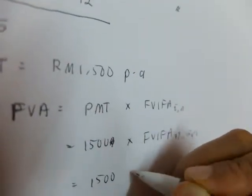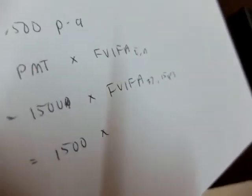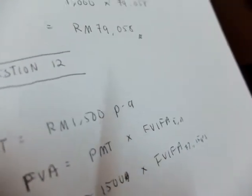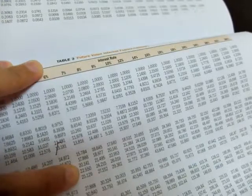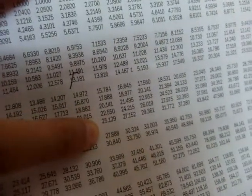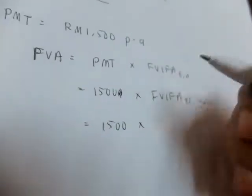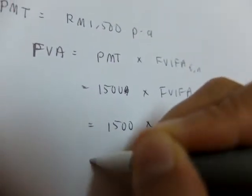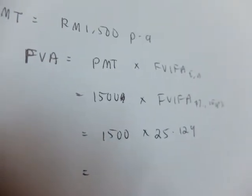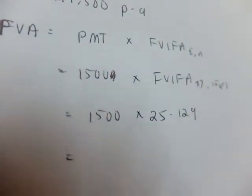So that's 1,500 multiplied by... Again, same table, 7%, 15 years. That's 25.129. So you get 1,500 multiplied by 25.129.